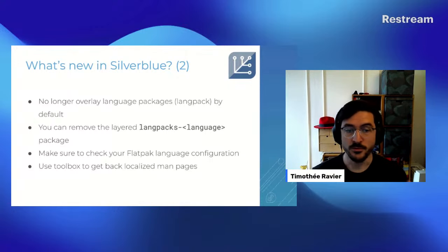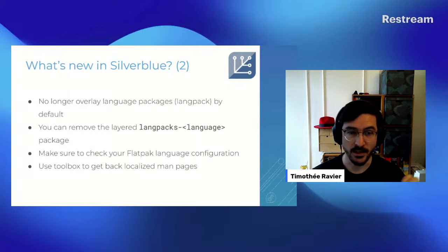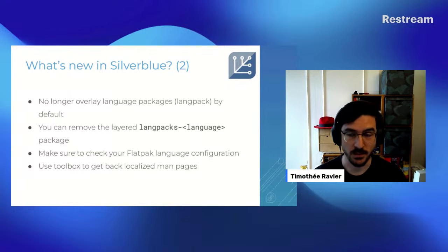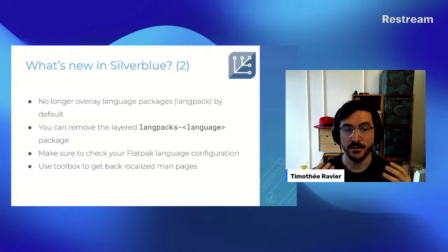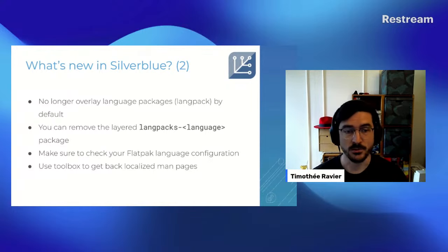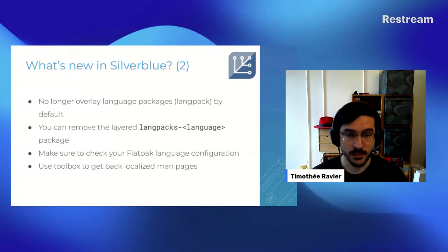The most important thing is that if you use Flatpaks — GNOME Software, GNOME in general — the GNOME Settings page is now capable of configuring the language for Flatpaks. You should get all the dictionaries in the correct language and translations for your Flatpaks as well. Make sure to check the Flatpaks configuration if you're missing dictionaries. One other thing that is now missing is localized man pages on the system. If you have man pages translated in your language, they are no longer installed — you'll have to install them in a toolbox, for example.